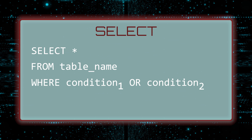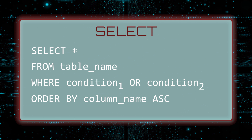And finally, you can sort the data returned by your query. To order the data by the values in a specific column, write ORDER BY followed by the column name. By default, it will sort in ascending order. But if you would prefer to be explicit, you can enter ASC to sort in ascending order, or DESC to sort in descending order.